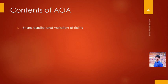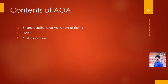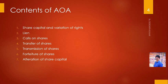The contents typically found in articles of association include: share capital and variation of rights — all information related to share capital, how it is divided, equity shares, preference shares, face value; lien on shares; calls on shares — how first call, final call, and middle calls are made; transfer of shares; transmission of shares; forfeiture of shares; alteration of share capital — information regarding when a company alters its share capital; and capitalization of profit — how profit is capitalized.